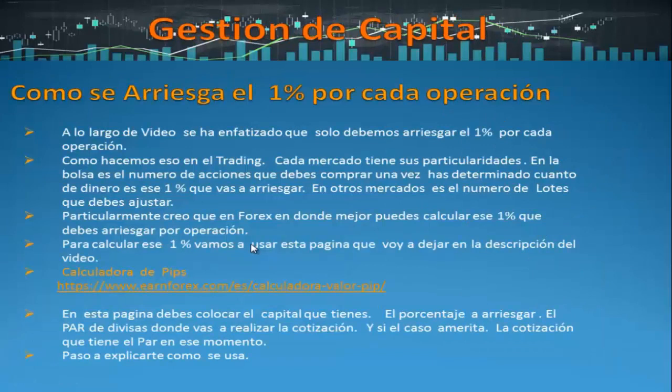A lo largo del video se ha enfatizado que solo debemos arriesgar el 1% por cada operación. ¿Cómo hacemos esto en el trading? Cada mercado tiene sus particularidades. En la bolsa es el número de acciones que debes comprar una vez que has determinado cuánto es el dinero del 1% que vas a arriesgar. En otros mercados será el número de lotes o contratos. En el Forex es donde mejor puedes calcular ese 1%. Para calcularlo vamos a usar una página — la voy a dejar en la descripción del video — donde debes colocar el capital que tienes, el porcentaje a arriesgar, el par de divisas y si el caso amerita la cotización de ese par.